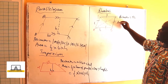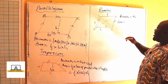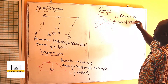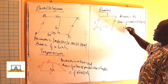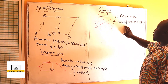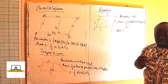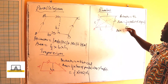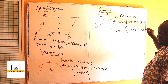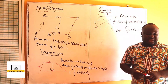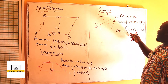The area of a rhombus is given by half times the product of the diagonals. Alternatively, the area is also equal to the length of the base times the height. So: area equals half times the product of diagonals, or area equals base times height.